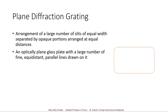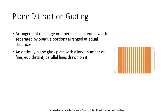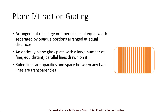Here in the figure, we have a rectangular section of a glass plate. Using a diamond pointer or a very sharp pointer, we draw very fine parallel lines across it. The path where we draw becomes opaque and the path where we do not touch it remains transparent. These alternating opaque and transparent regions make this grating. The ruled lines are opacities and the spaces between any two lines are transparencies.